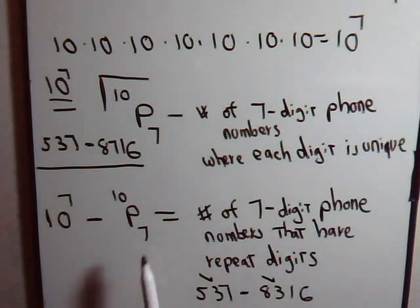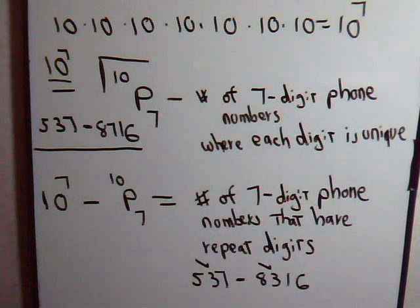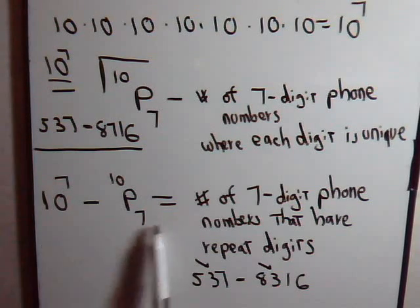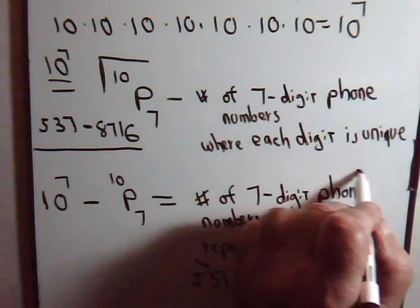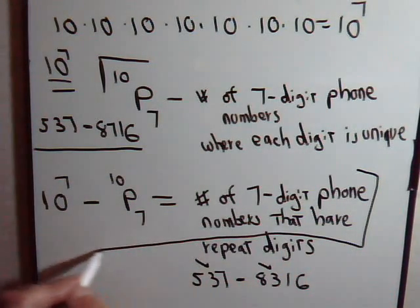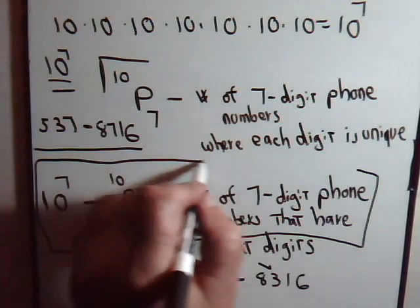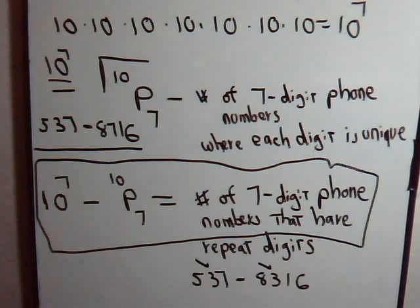So if we subtract this from the total number of telephone numbers that is possible, then that gives us the number of seven digit phone numbers that are going to contain repeat digits. And we're not going to try and do this calculation. Obviously, it's going to be a large number. We just want to try to demonstrate the thinking and the strategy that would go into determining a formula as to how we could derive that number. And that is this right here.